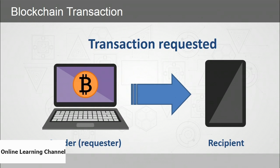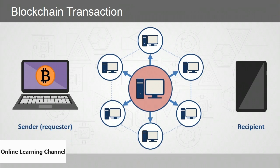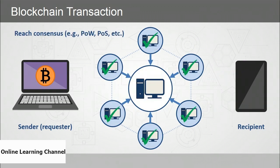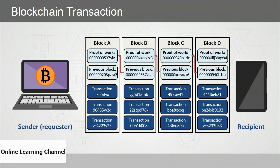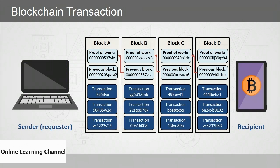Steps in a blockchain transaction: someone accesses a Bitcoin exchange and the transaction is requested. The sender makes the request, signed by their private key, and the request goes to the recipient. A digital signature is created using the private key and transaction details, and the request is propagated to all nodes. Nodes compete to solve the problem using proof-of-work or proof-of-stake. The first node to solve it broadcasts results, nodes validate the solution, and once more than 50% agree, the transaction is validated. The new block includes a hash matching the previous block, and the recipient now has the Bitcoin.